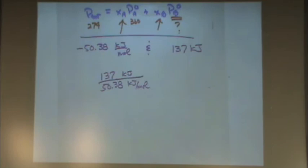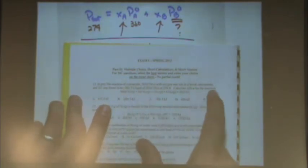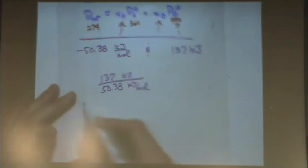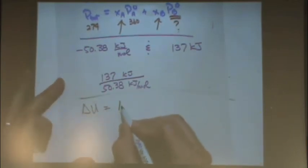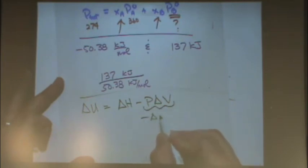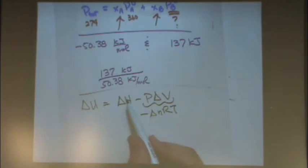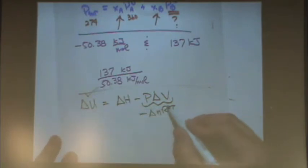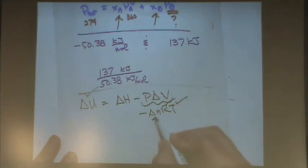Okay, number 12. This is a bomb calorimeter. We have delta U. Calculate delta H for the reaction. Okay, you know this formula, right? But this is a reaction, so I'm going to change it to this. Delta U is given. R is a constant. T is given. Delta N you can get from the reaction. There we go.